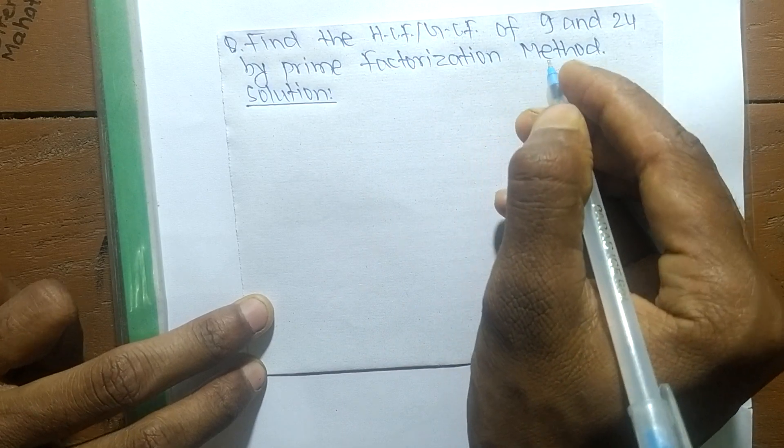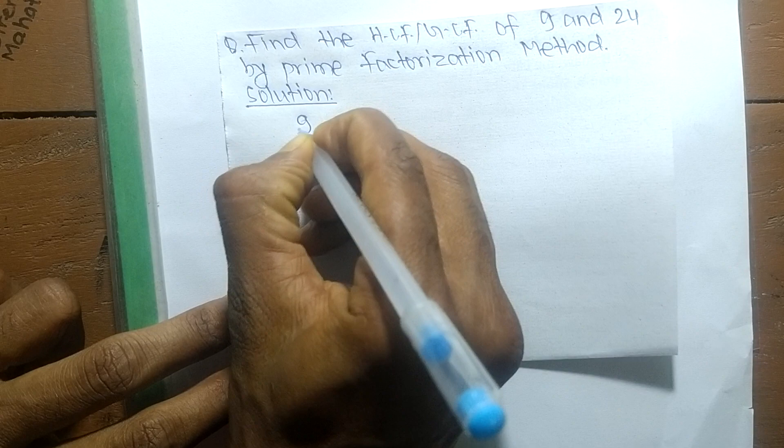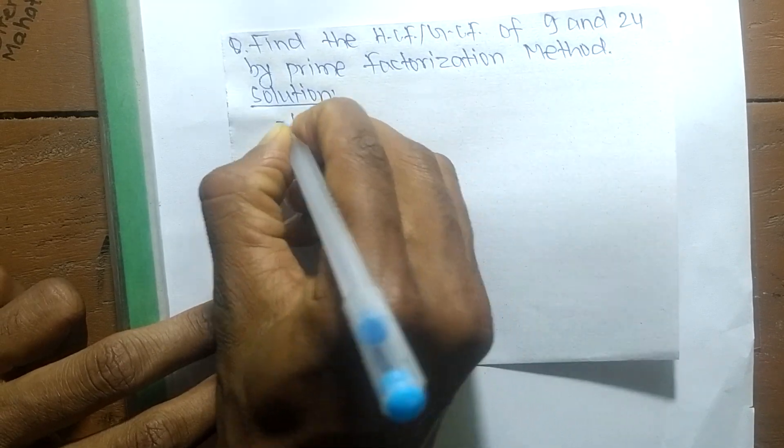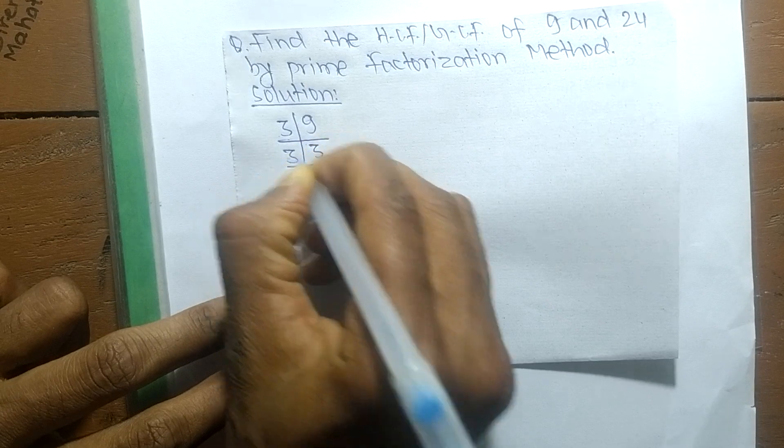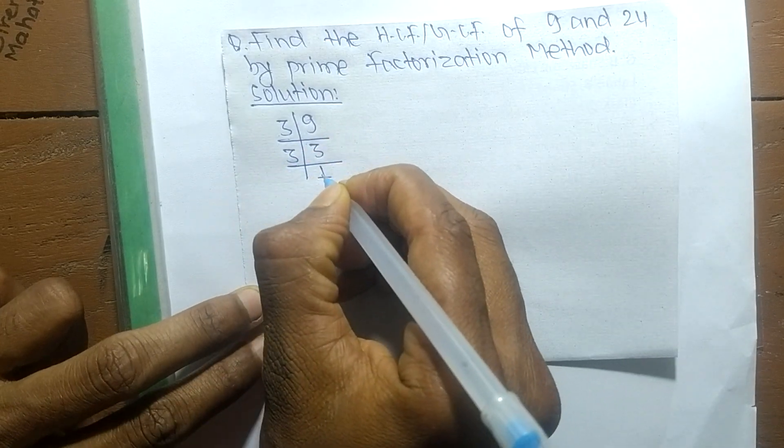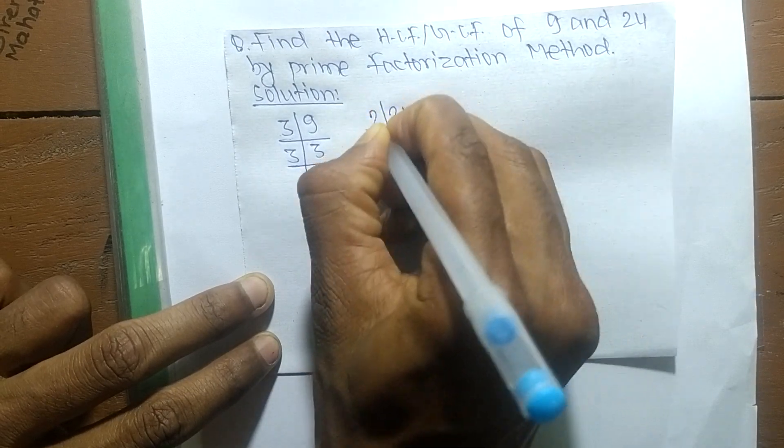So first we find out the prime factors of 9. So it is 3 times 3 which equals 9, like 3 times 1 equals 3. In the same way, the prime factors of 24 is 2 times 12 equals 24.